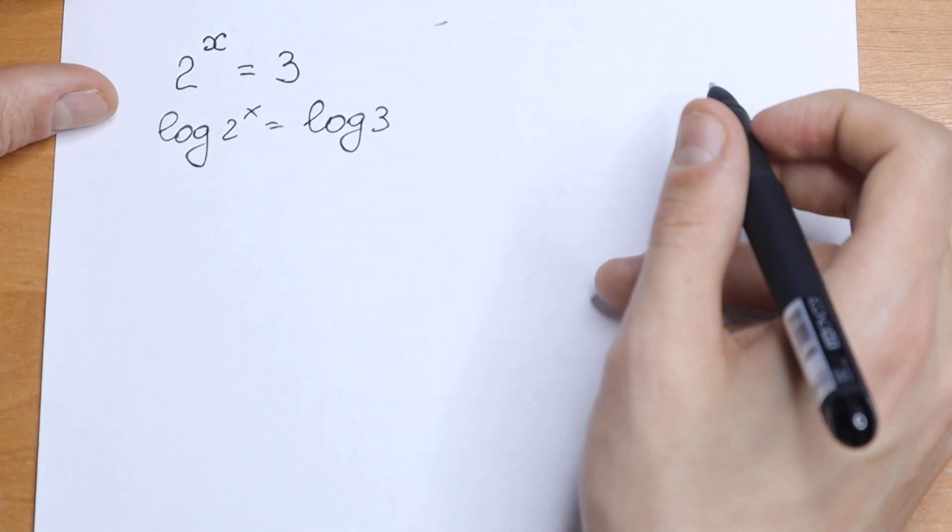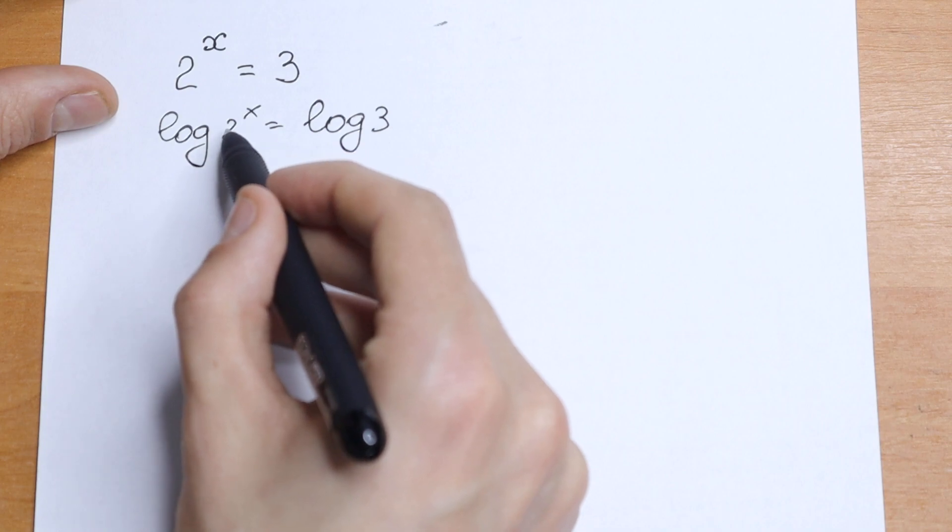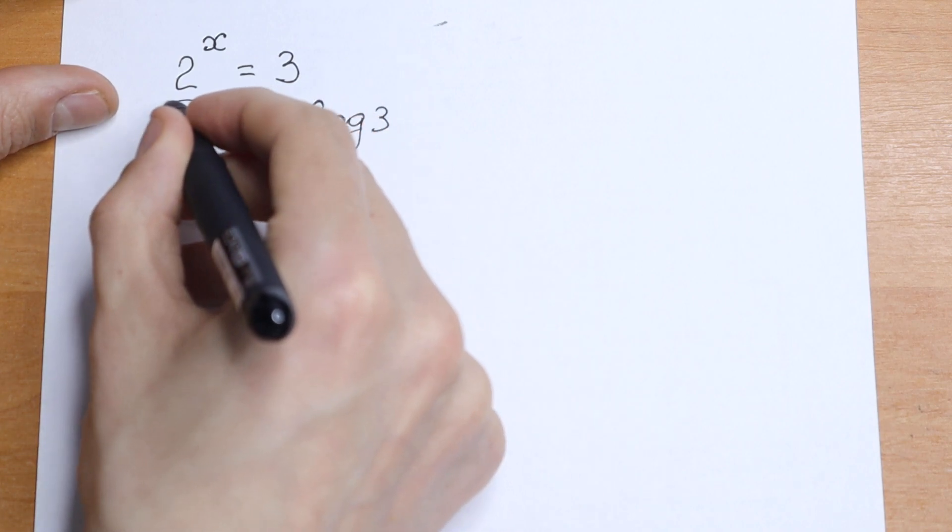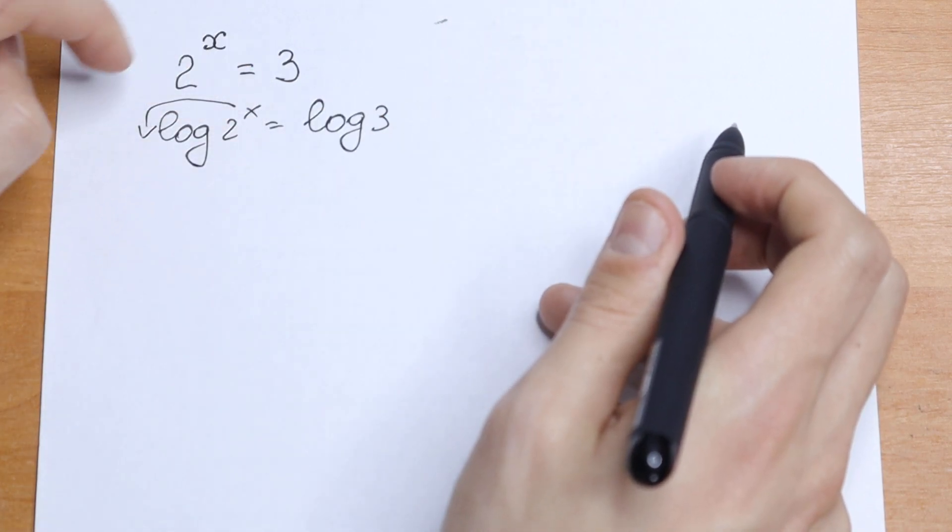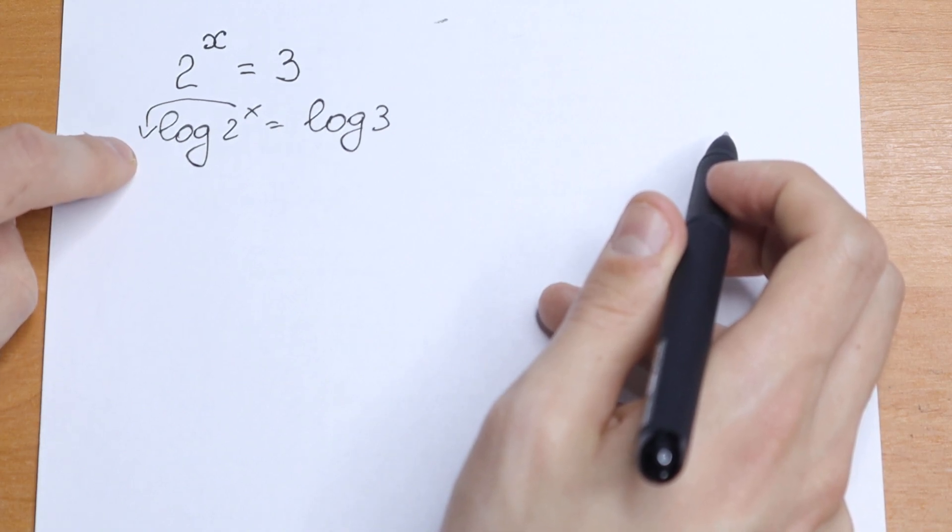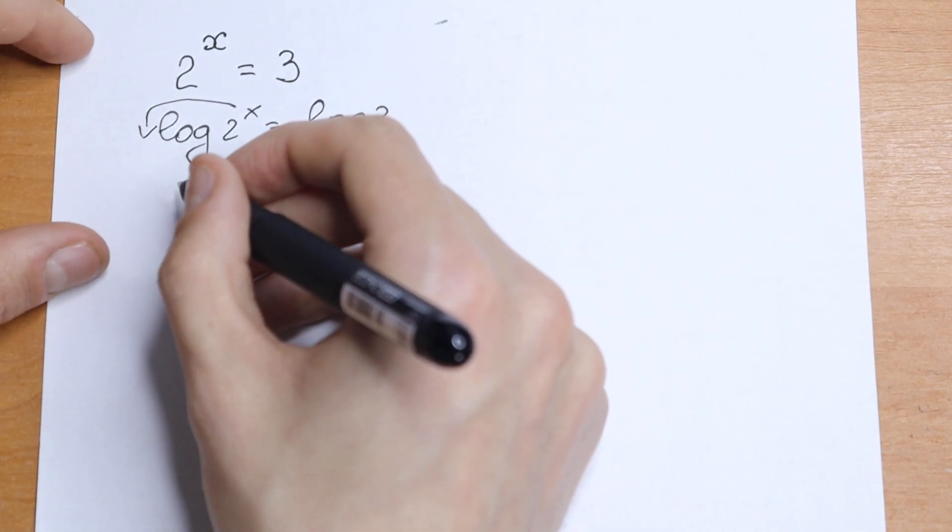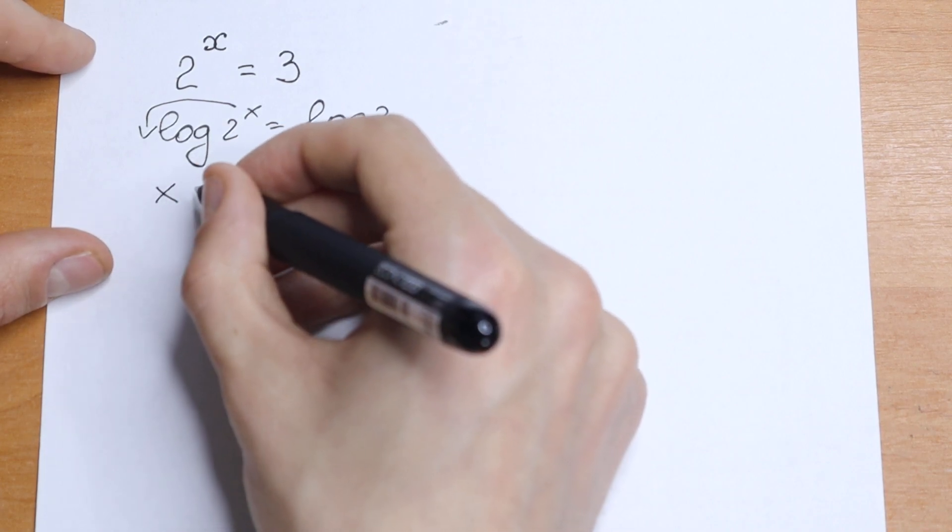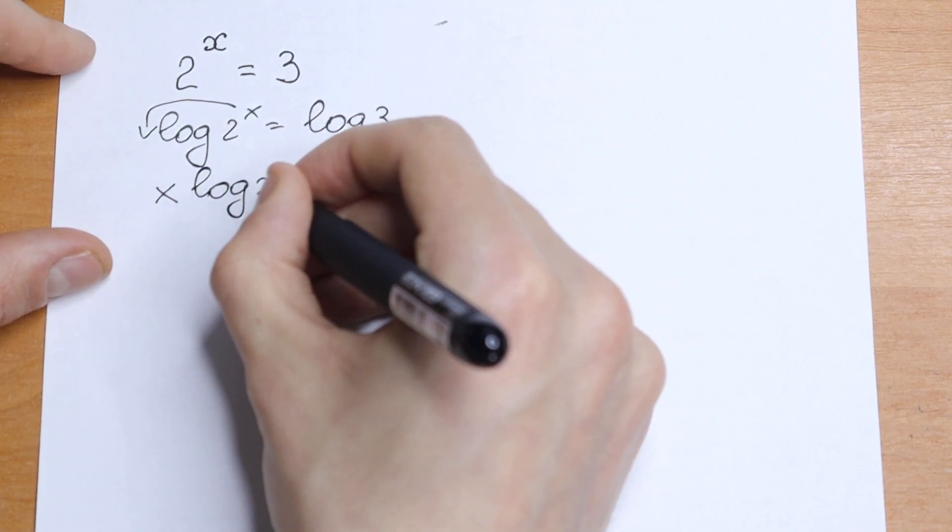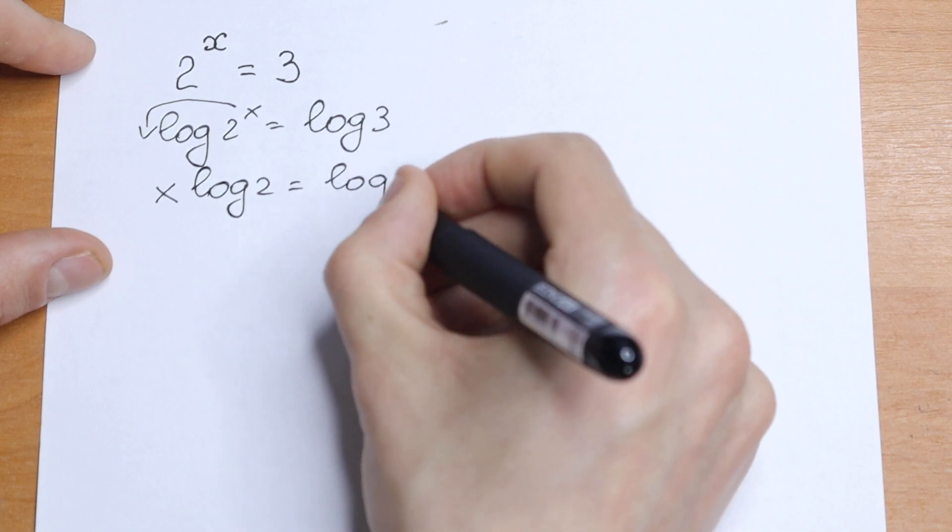What are we going to do next? We all know that if we have x as the power of 2, this x can be written in front. So this x jumps to the beginning of the log. We have x times log 2 equal to log 3.